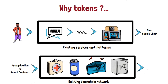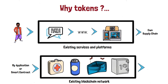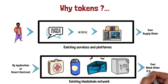Instead of creating all those services from scratch, I can simply host or create a token on top of that existing blockchain. My application uses an existing blockchain network that provides the services I need, and on top of that I have my token. Once I've grown and need more personalization or customization that the existing blockchain doesn't support, then I can create my own blockchain.